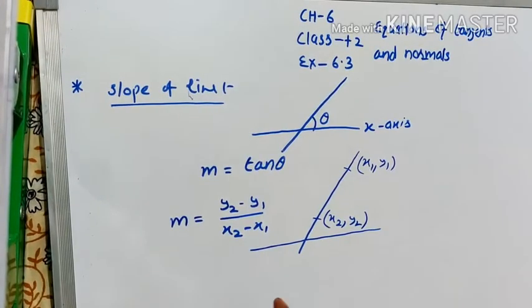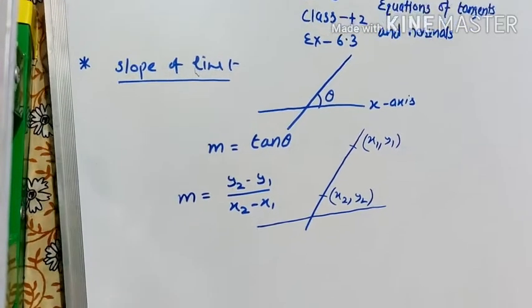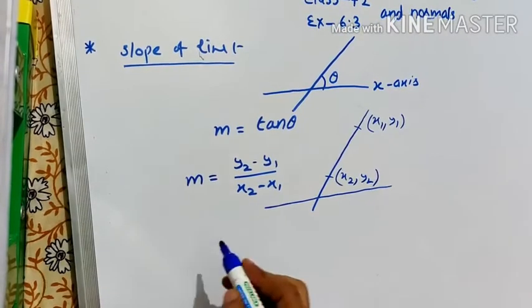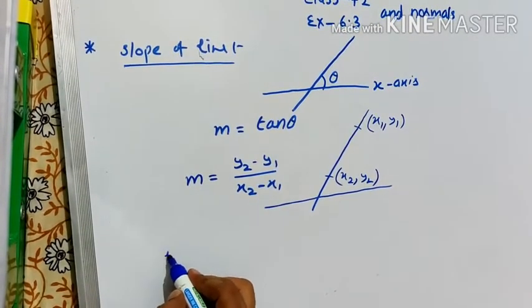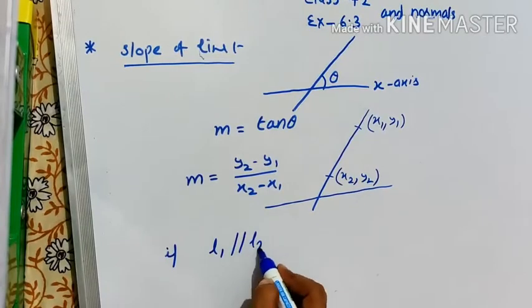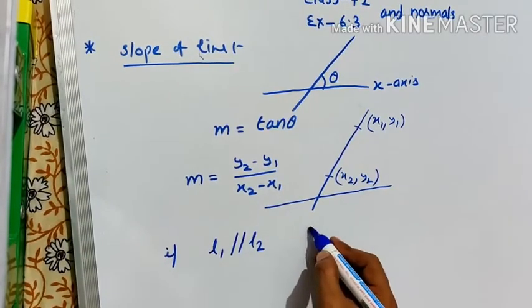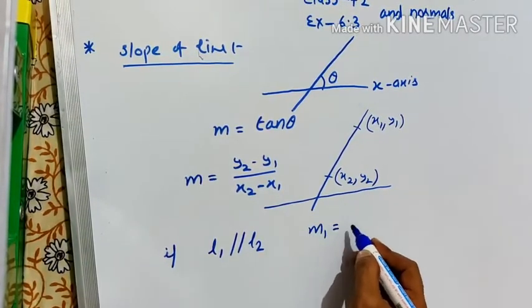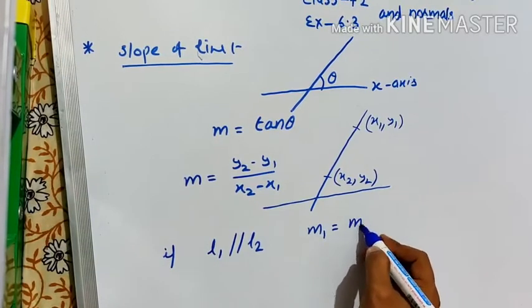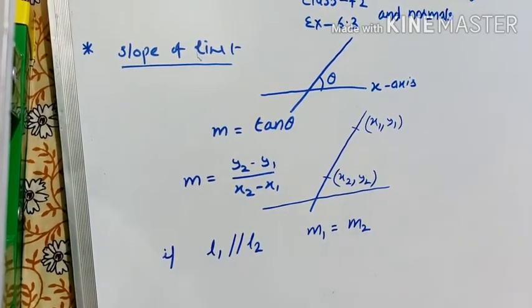We covered this concept in class 11, just reviewing the results. If L1 is parallel to L2, we know that slope of line 1, that is m1, is equal to slope of line 2, that is m2.